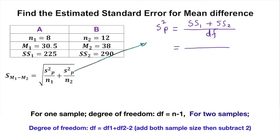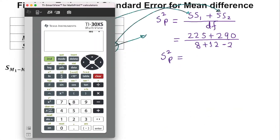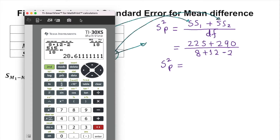Substituting the known values: SS1 is 225 and SS2 is 290. So we have 225 plus 290 over the degree of freedom. For two samples, we add both sample sizes: 8 plus 12 equals 20, then subtract 2, giving a degree of freedom of 18. Using the calculator with the fraction key, we get 28.611 as the full variance.